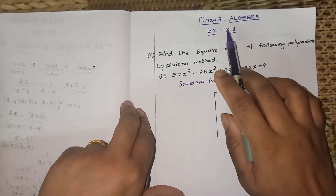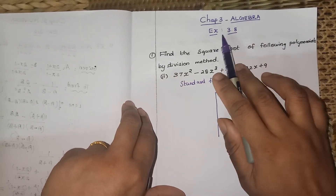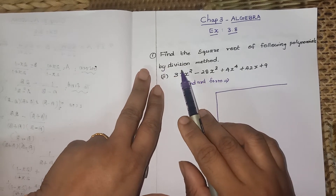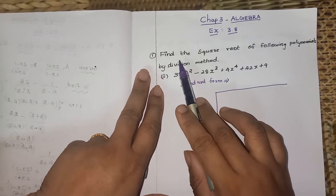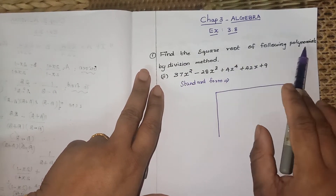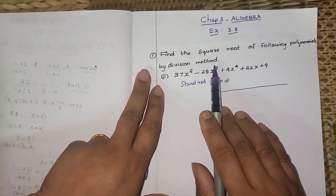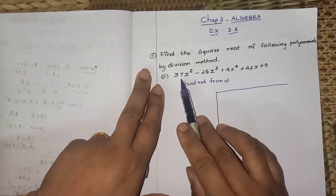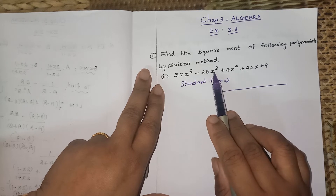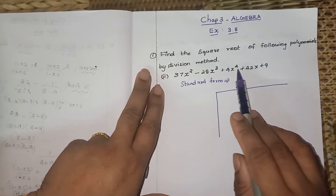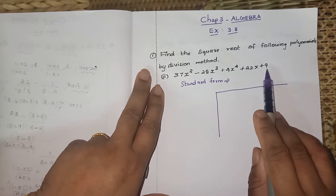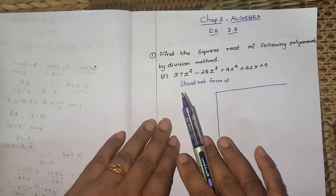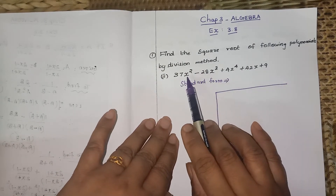Welcome to the Lawmax channel. Chapter 3 Algebra, Exercise 3.8, first question — a very important five-mark question. Find the square root of the following polynomials by division method. The second subdivision: 37x² minus 28x³ plus 4x⁴ plus 42x plus 9.